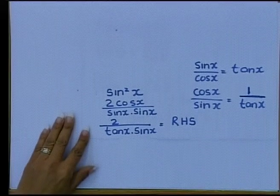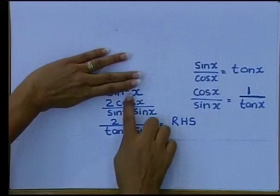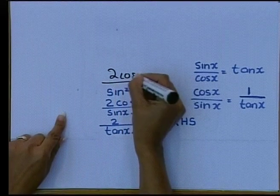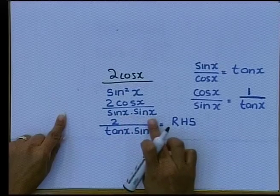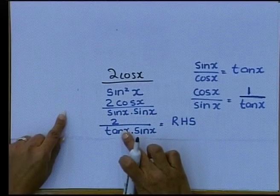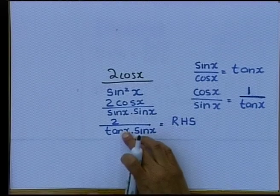Look at that final step quickly. I wrote two cos. I wrote sin squared - remember you had two cos here on top. I wrote sin squared as sin times sin. Cos over sin. The tan goes to the bottom. How many marks will you get for the previous example? That was a six-mark question, everybody. That is a six-mark question.